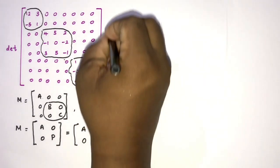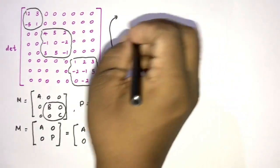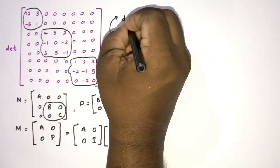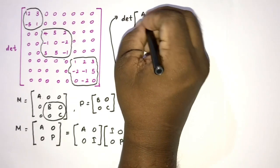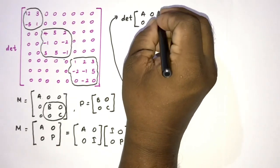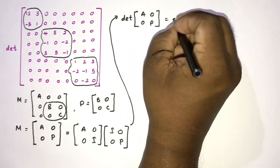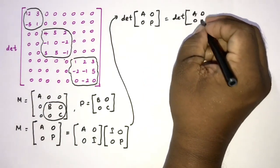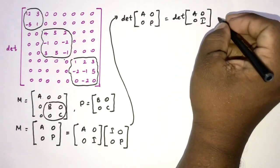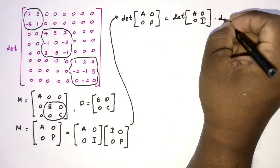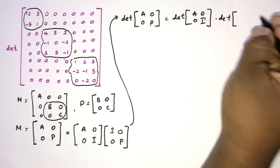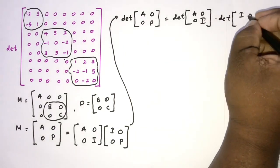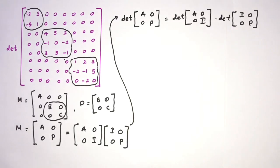Then as the next step we can take determinant. So determinant of A, 0, 0, P is equal to det here A, 0, 0, I times det here we have I, 0, 0, 0, P.